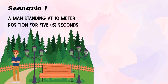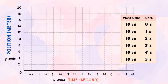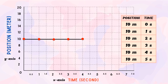Consider a man standing at 10 meter position for 5 seconds. Let us put it on a position-time graph. The first step is to put your data on a table. For the second step, we plot the values as points on the graph. In this type of graph, time is always plotted on the x-axis and position is plotted on the y-axis. From 0 seconds up to 5 seconds, the man is standing at 10 meters. For the third step, draw a straight line through the points. This graph shows stationary motion.